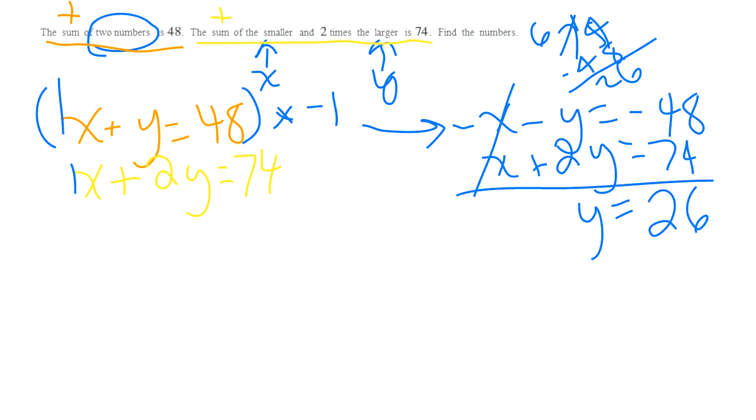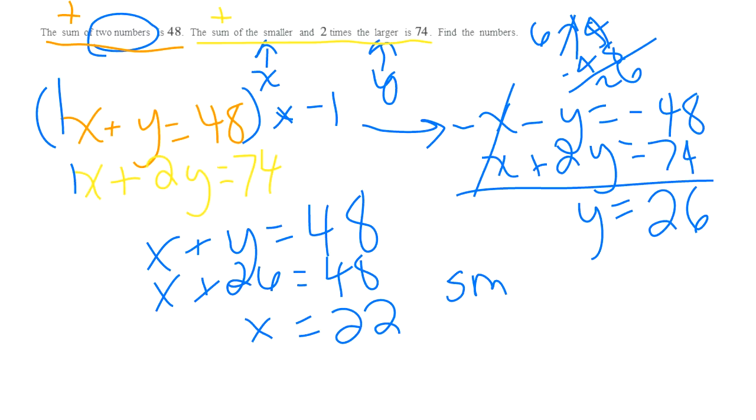So if Y is 26, then I can use either of these equations and I'll just use the first one to find X. So Y is 26. So I subtract 26 from both sides. So X is 22. So the smaller one is 22 and the larger is 26.